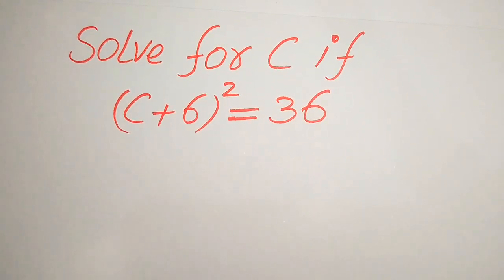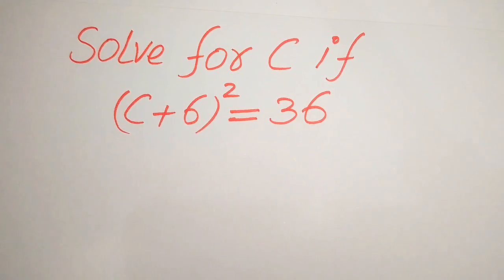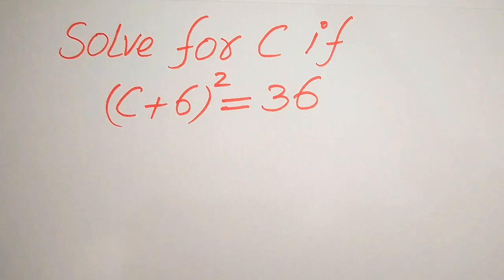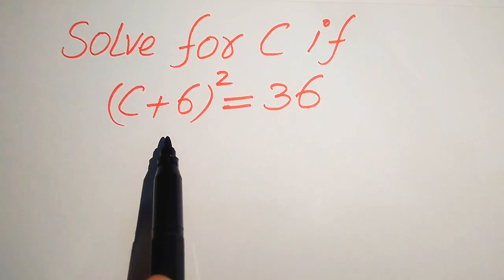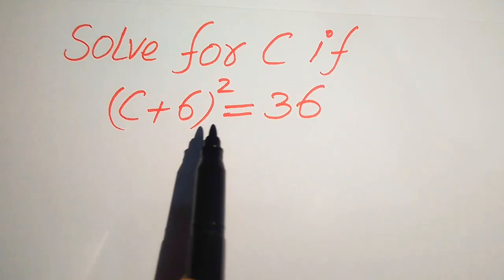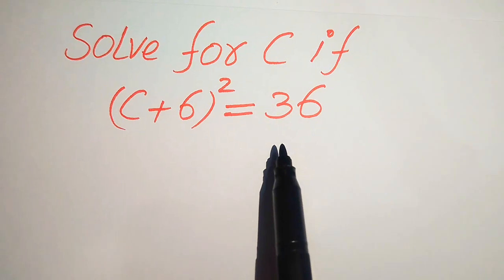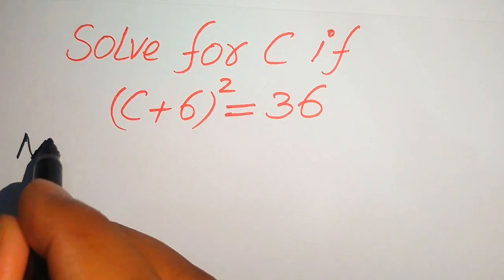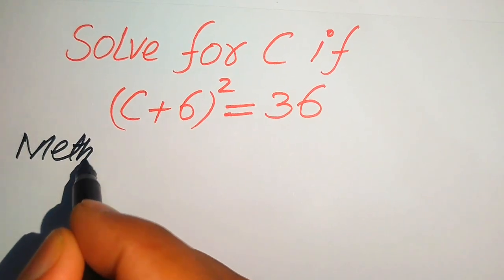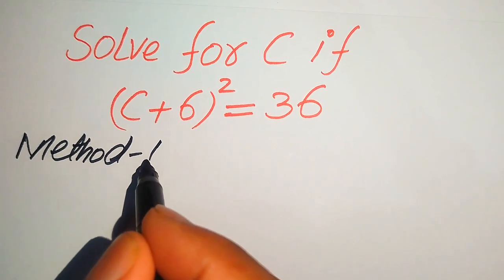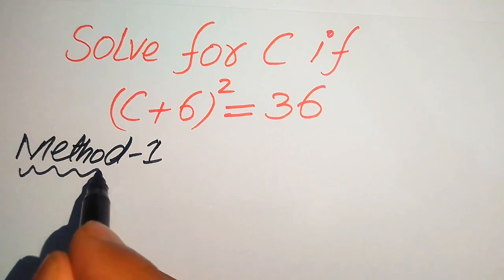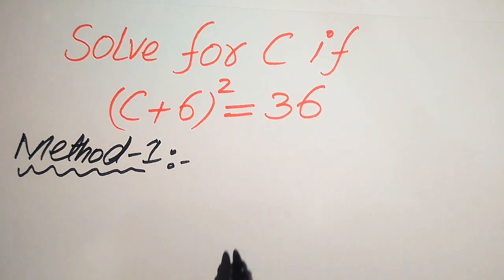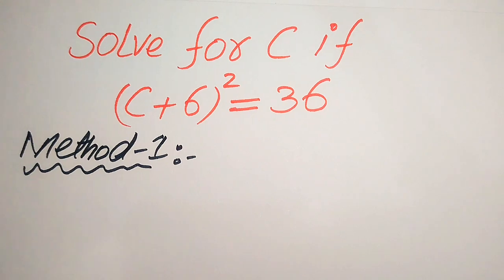Hello everyone, today I want to show you how to solve this problem for the values of c if we have (c + 6)² = 36. We solve this problem using two methods, and I hope you like both of these methods. If you have any other method in mind, please don't hesitate to write it in the comment section.